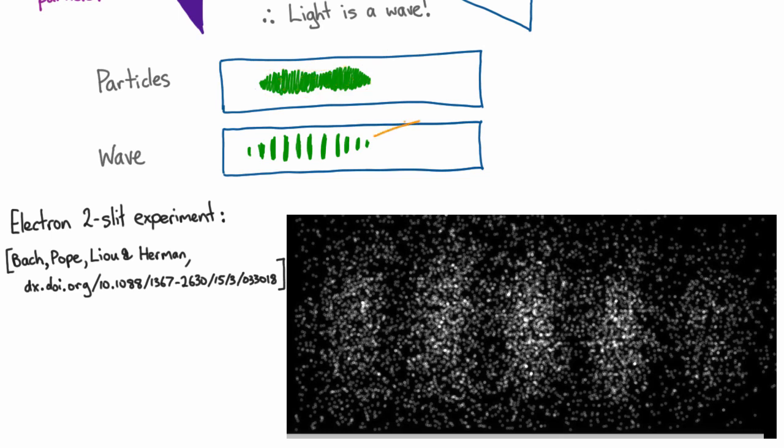And if the wave theory had been exactly right we wouldn't have expected to see blobs at all, we would have expected to see a weaker and weaker version of that interference pattern. But instead we need a hybrid theory that can explain both the blobs appearing and the eventual interference pattern. And that hybrid theory is what we now call quantum mechanics.